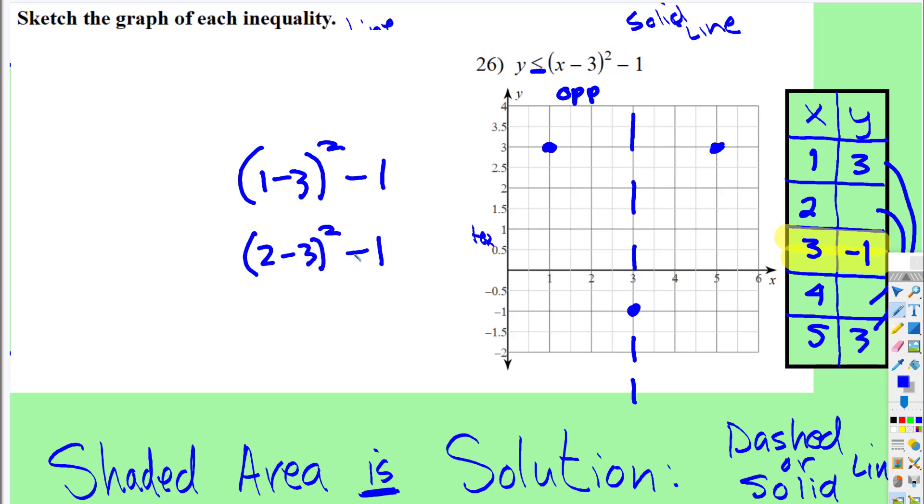Then I'm going to put 2 in there: 2 subtract 3 is negative 1, negative 1 squared is 1, 1 subtract 1 is 0. So when x is 2 and x is 4, they'll have a height of 0, and then we'll do the solid line.